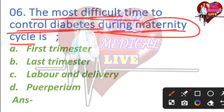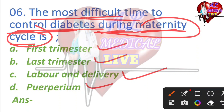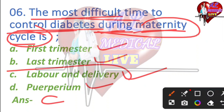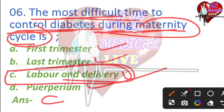During the maternity cycle, what is the most difficult time to control? The options are: A) first trimester, B) last trimester, C) labor and delivery, D) puerperium period. The right answer is C — labor and delivery. During labor and delivery time, the diabetes cycle is most difficult to control.